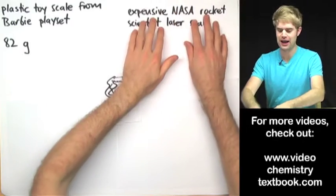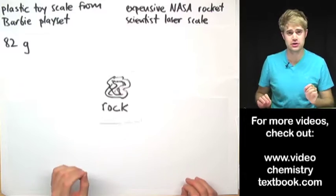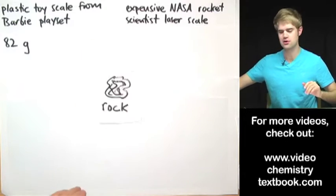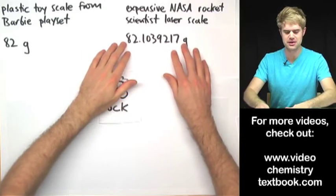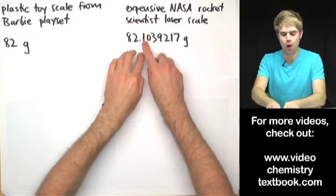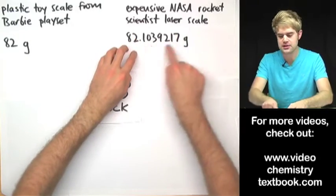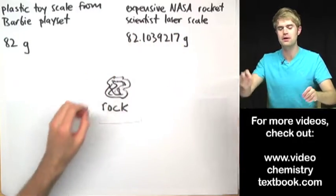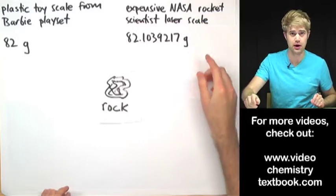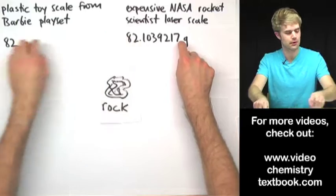Or I could take the rock and put it on an expensive NASA rocket scientist laser scale. It costs $10 million but the laser scale gives me this answer. It says 82.1039217 grams. All these extra numbers are here because the scale, the laser scale, is much more sensitive and so it gives me a much more precise number than I get from over here.